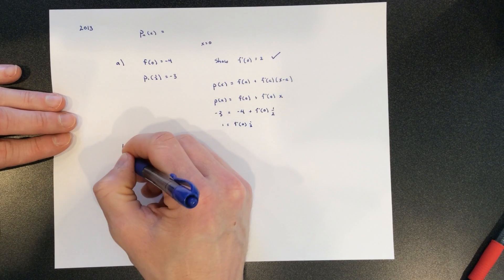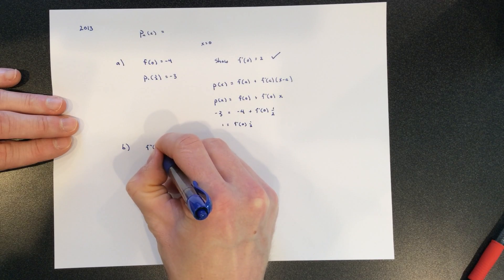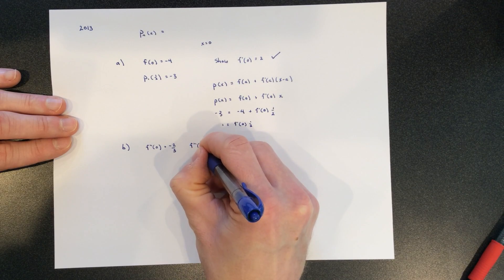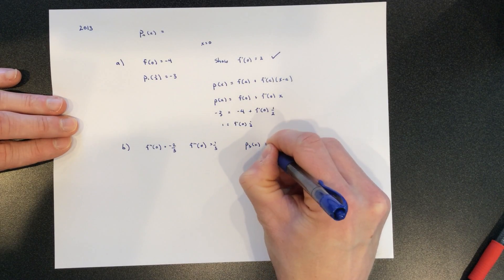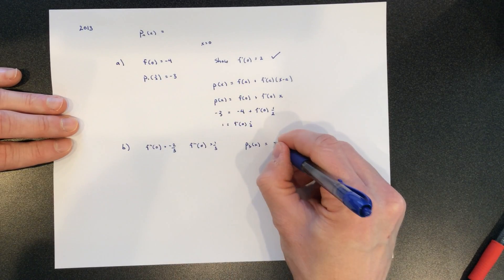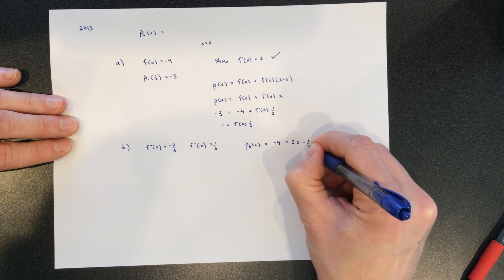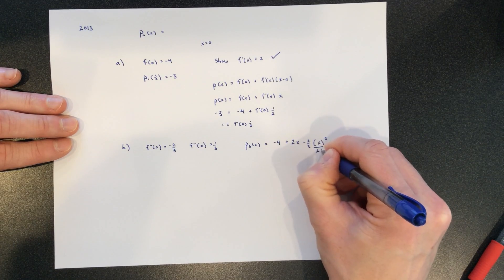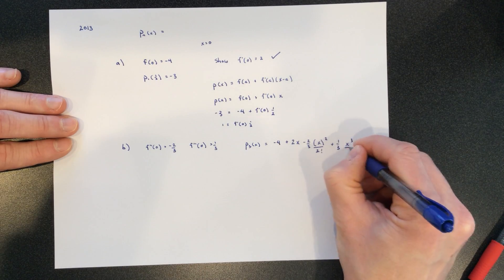Part B says we also know that the second derivative is negative 2 thirds, and the third derivative is 1 third. And it just wants us to write out p3, the third order. We know all these things. We know the function is negative 4. We know the first derivative is 2. We know that this next one, x squared, over 2 factorial, and then plus 1 third x cubed over 3 factorial.